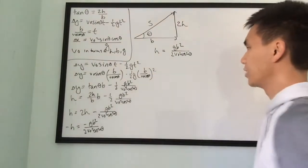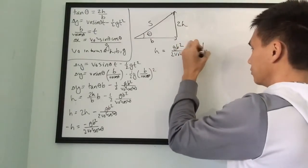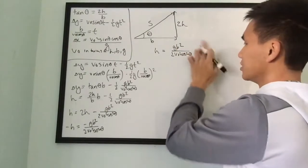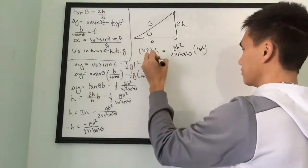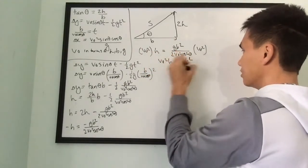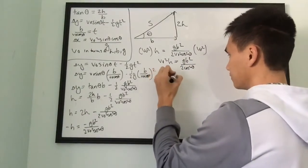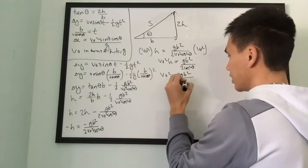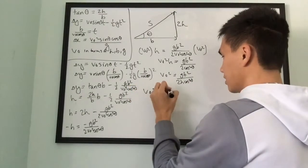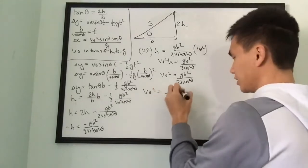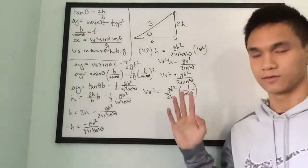Isolating v-naught²: multiply both sides by v-naught² to get v-naught²·h equals g·b² over 2·cosine²(θ). Then divide by h: v-naught² equals g·b² over 2h·cosine²(θ). I'm going to rewrite this as g·b² over 2h multiplied by the reciprocal of cosine²(θ) — since cosine²(θ) is in the denominator, I can move it out as a reciprocal.